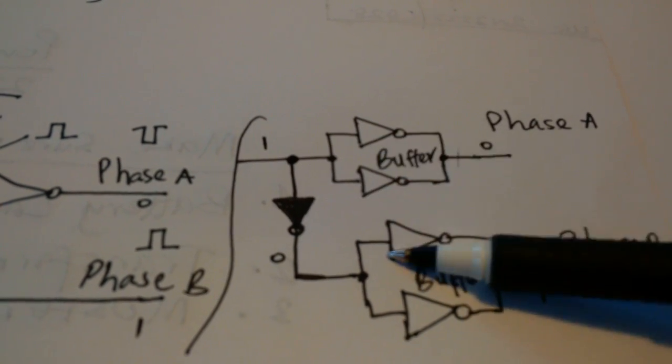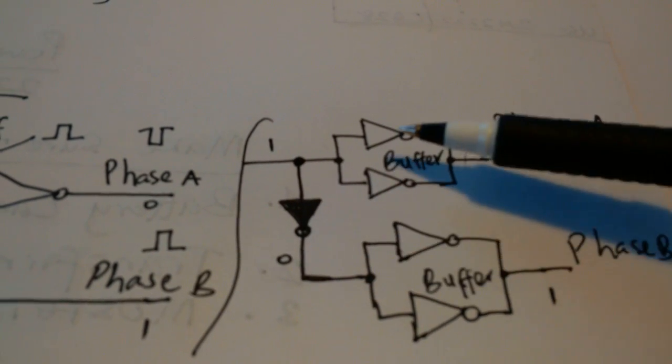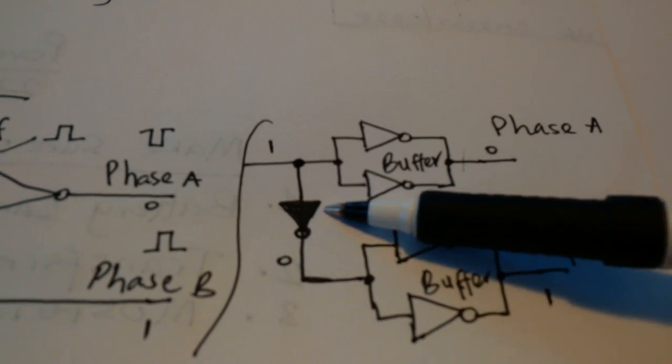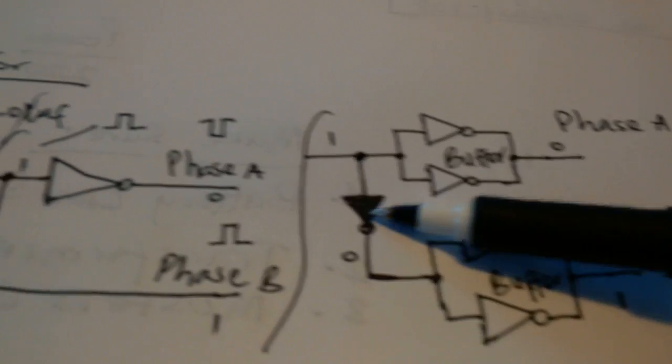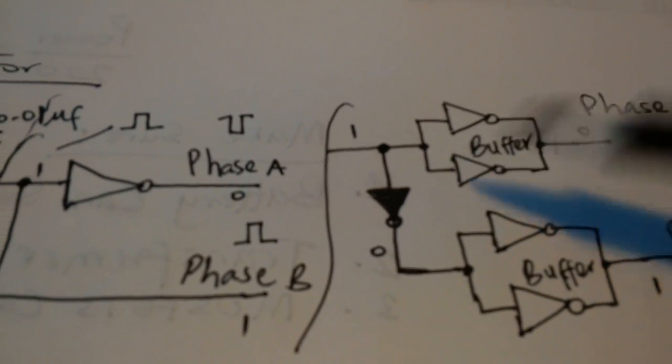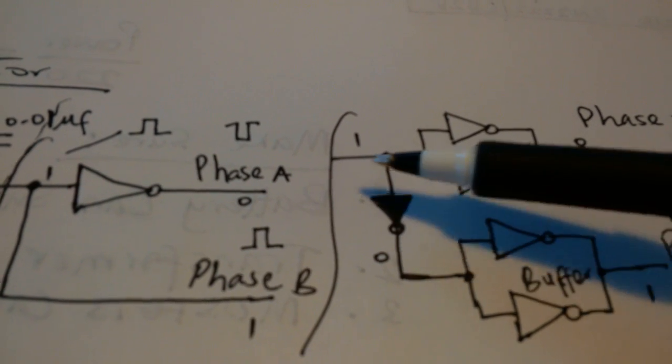Now, there's a different component you see here. It's the same as this because it has the same bubbles that they have, which shows their inverters, but it has a different color. The reason we give it a different color is because it's not part of the original hex inverter. Nevertheless, it is an inverter.